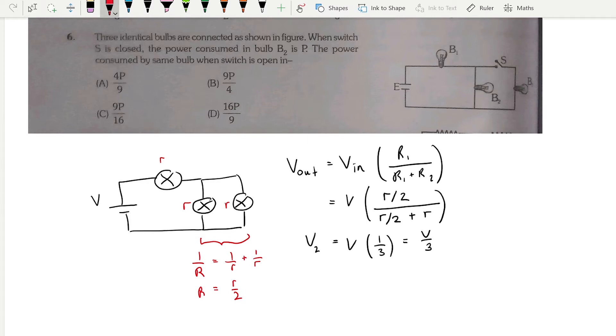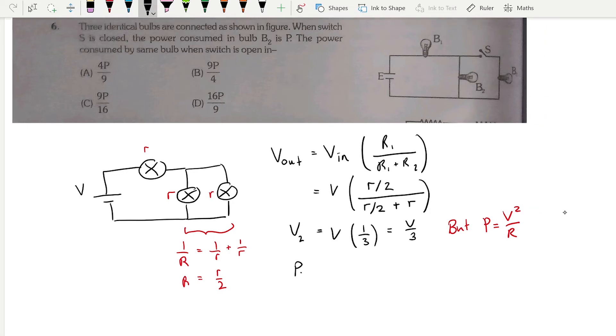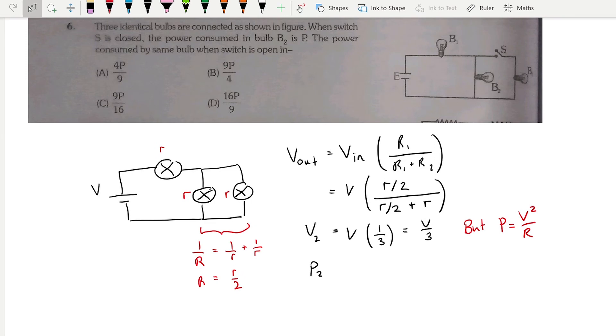But the question wants me to find power. So what I need to do is relate power to voltage. Generally speaking, we know that power is v squared over r. So applying this equation to this situation, we have power across the second bulb, that is equal to v over 3, all squared, divided by the resistance across that bulb, which is small r. So that is going to reduce to v squared over 9 times r.